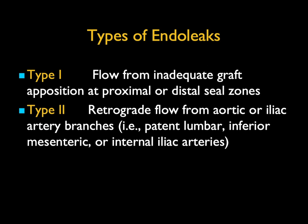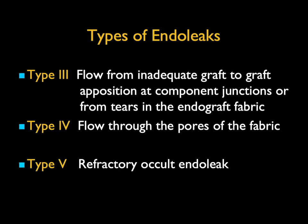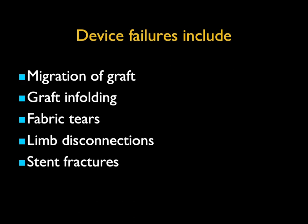Endoleaks are divided into five types. Type 1: flow from inadequate graft apposition at proximal or distal seal zones. Type 2, the most common: retrograde flow from aortic or iliac artery branches — lumbar, IMA, internal iliac — these patients may end up with embolization. Type 3: flow from inadequate graft-to-graft apposition at component junctions, or from tears in the endograft fabric — graft failure, with leaks in the middle. Type 4: flow through the pores of the fabric — very rare with new materials. Type 5: refractory occult endoleak. Device failures include migration, folding, tears, dislocations, or fractures.